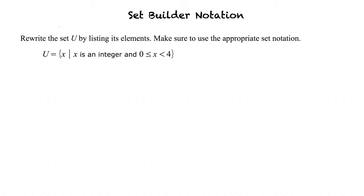This video will cover the topic of set builder notation. Let's take a look at this example: rewrite the set u by listing its elements, making sure to use the appropriate set notation. This can be read as: u equals the set of x such that x is an integer greater than or equal to 0 and less than 4. So we must list all the integers that satisfy those three conditions.